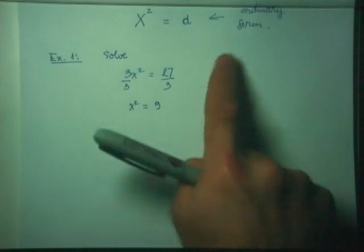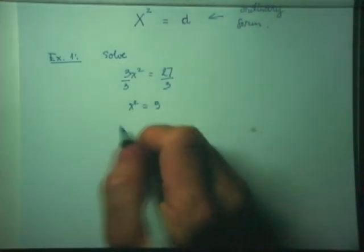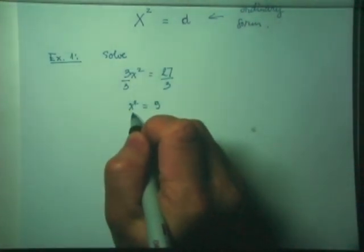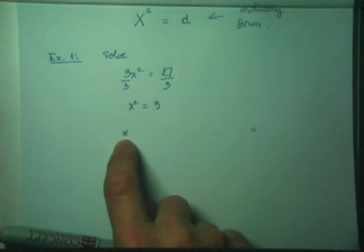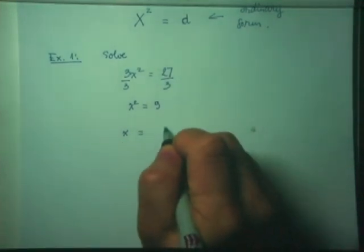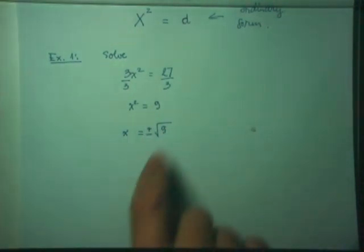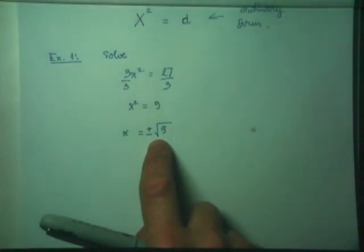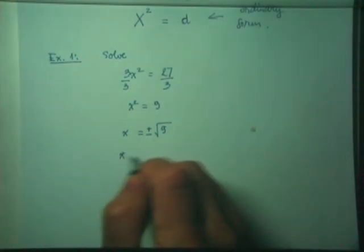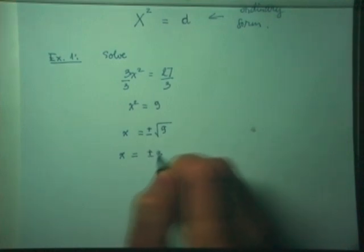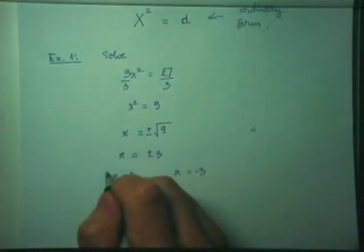At this point, my equation is in the ordinary form. Now, the square root property says the left-hand side — the side that contains the perfect square — you can just simply write X, ignoring the square completely. On the right-hand side, you take plus and minus the square root of 9. That produces two different answers. Square root of 9 equals 3, so my real solutions are X equals plus 3 and X equals negative 3. I have found two solutions for X.